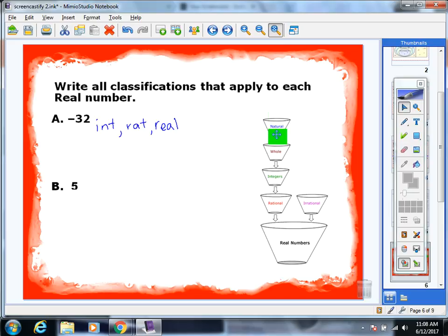The number 5 falls all the way at the top. And it's going to have natural, whole, integer, rational, and real. That is quite a few classifications.